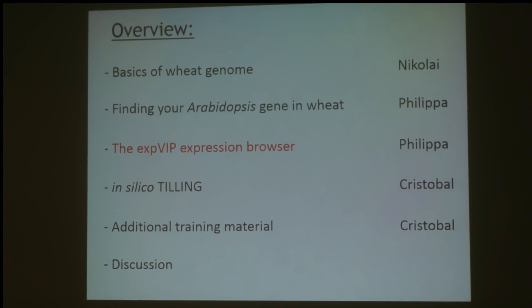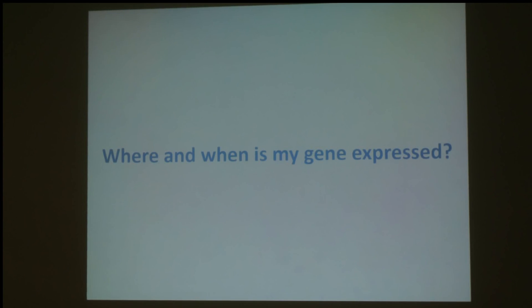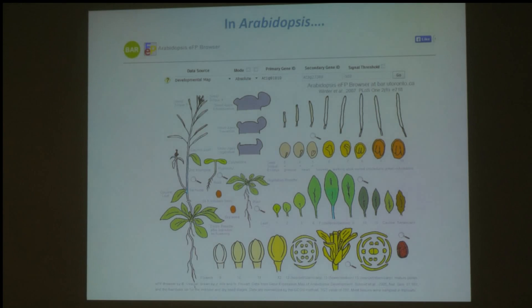Then we'll move on to the expression browser. One of the first questions you might have when you start working on a gene is what's it doing? One way to start addressing this is: where and when is my gene expressed? In Arabidopsis there are some very nice resources, such as the EFP browser, where you can search for your favourite gene and see where it's expressed across all the different tissues and ages of the plant.